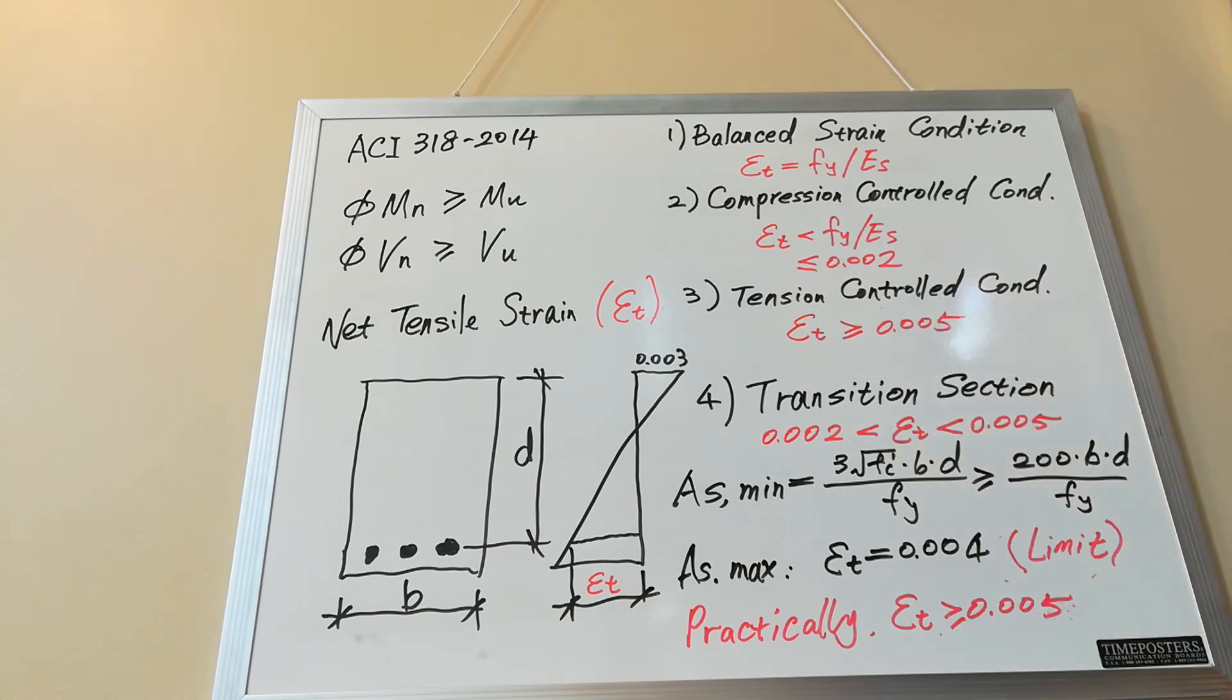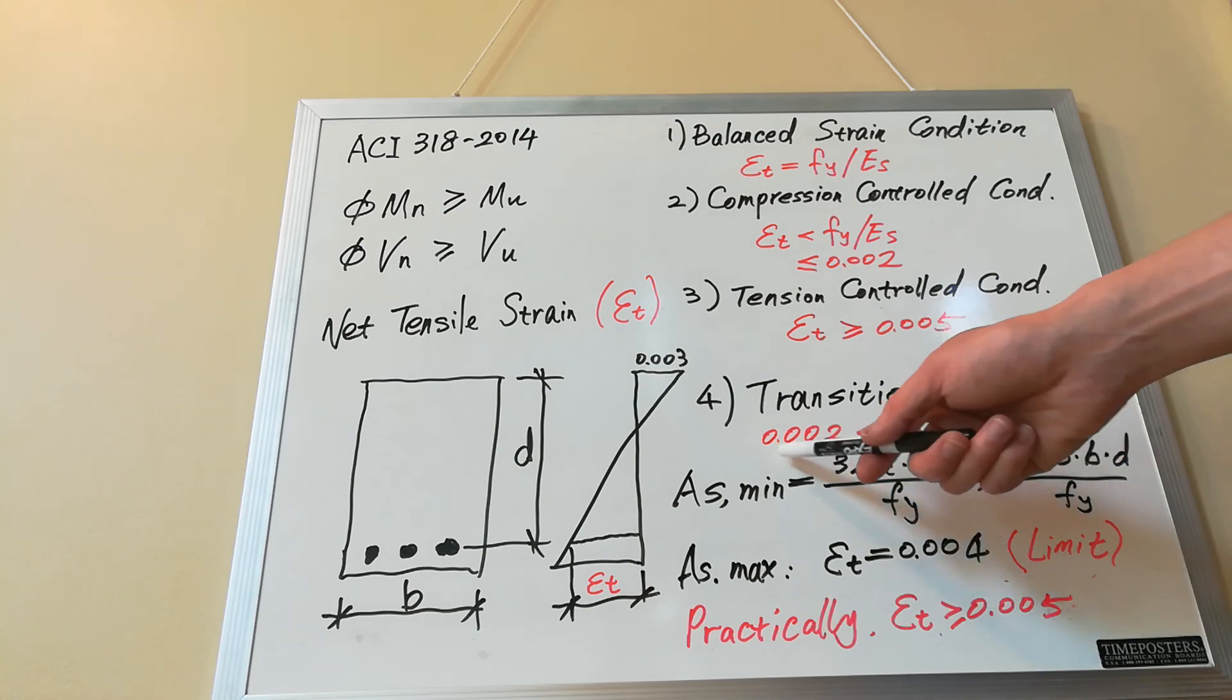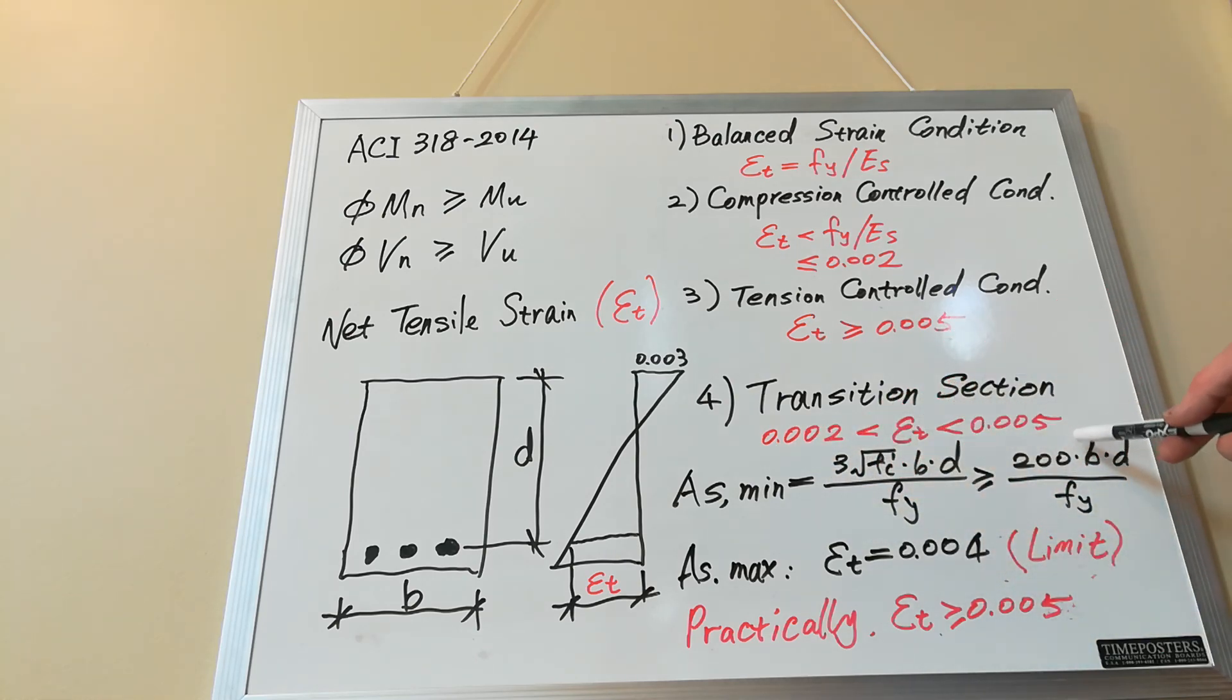The last one is transition section. This is a section where epsilon t is between 0.002 and 0.005, between the compression-controlled and tension-controlled.